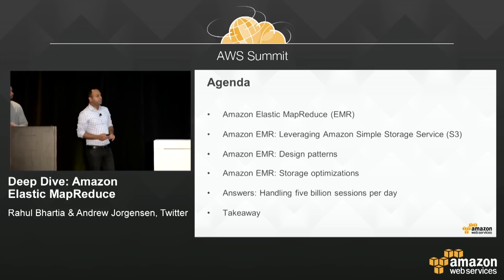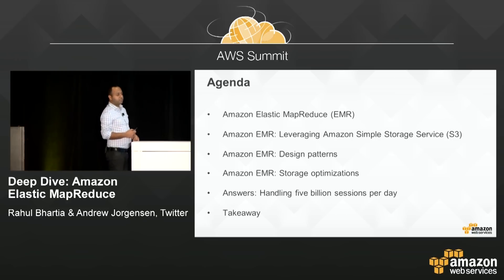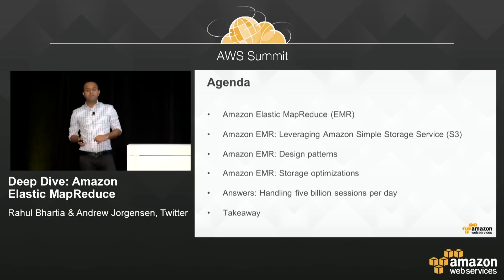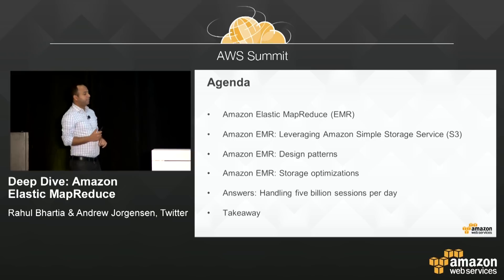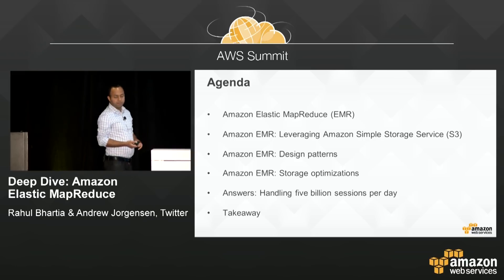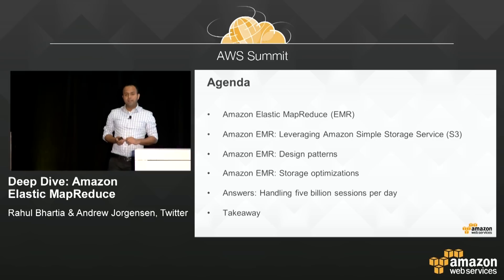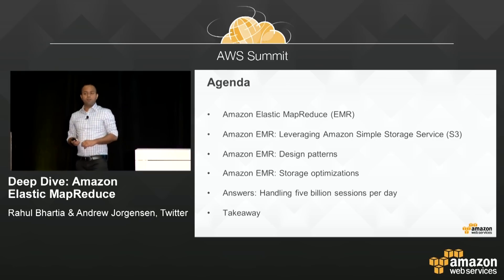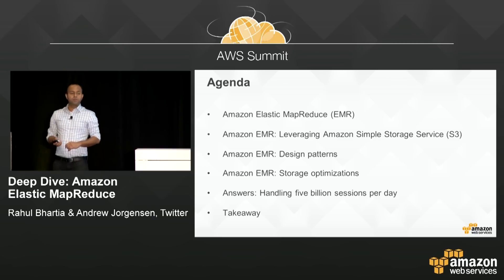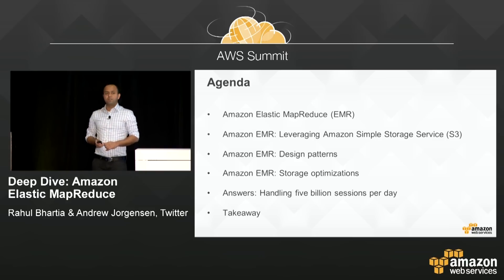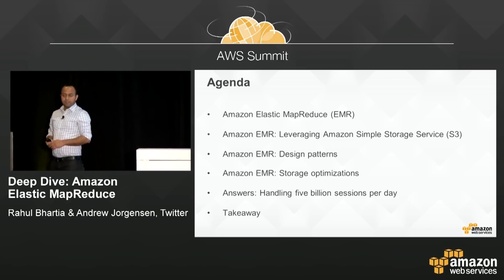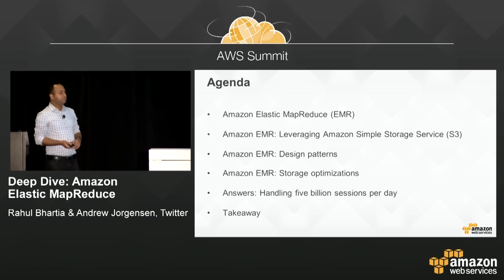This is the agenda we're going to cover. We'll do a quick introduction on EMR and some of the features around it. Then we'll talk about how you can leverage Amazon S3 as an object store with EMR, and some design patterns with EMR on AWS — like how customers are using EMR and in which situations. Finally, we'll cover EMR optimizations around storing your data, file formats, file choices, and compression. Andrew will then talk about Answers and their architecture handling 5 billion sessions per day, and we'll leave you with some takeaways.